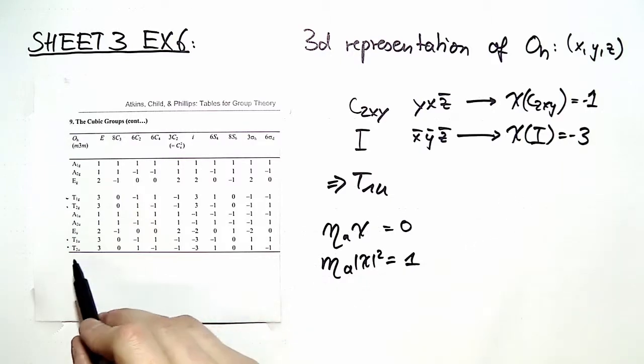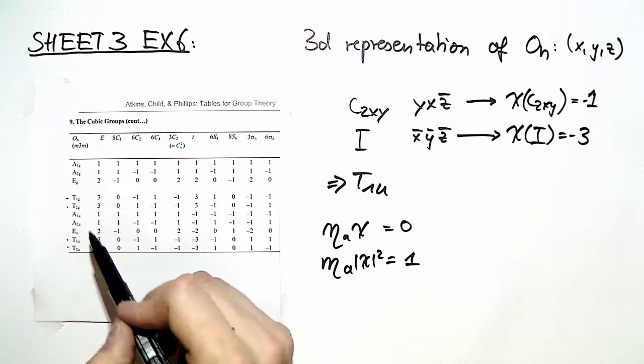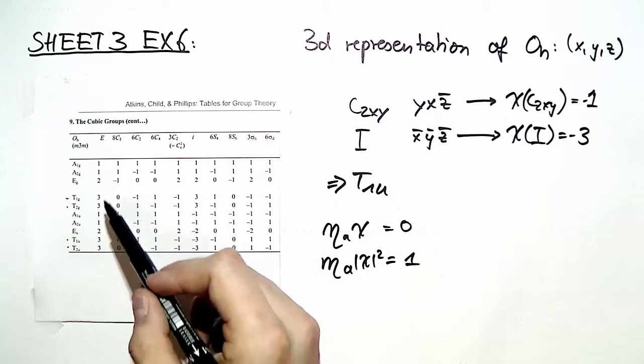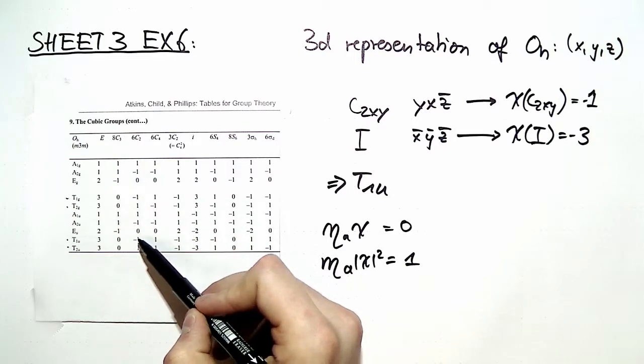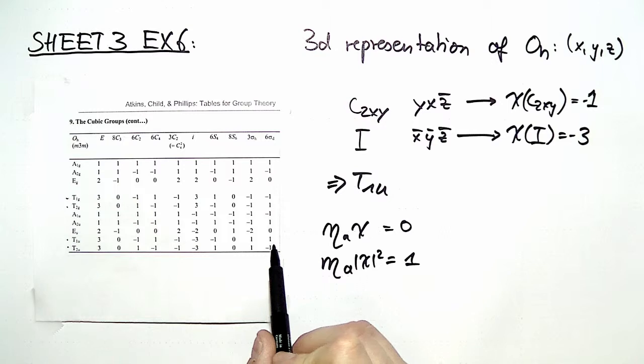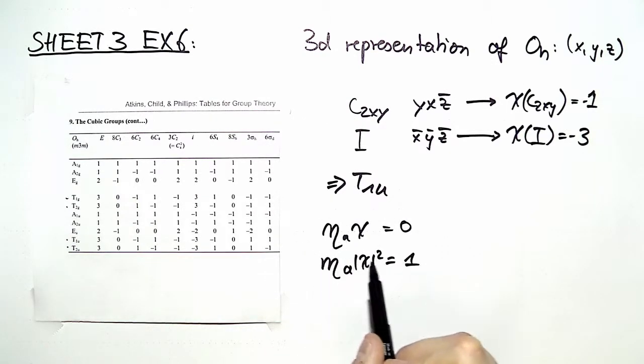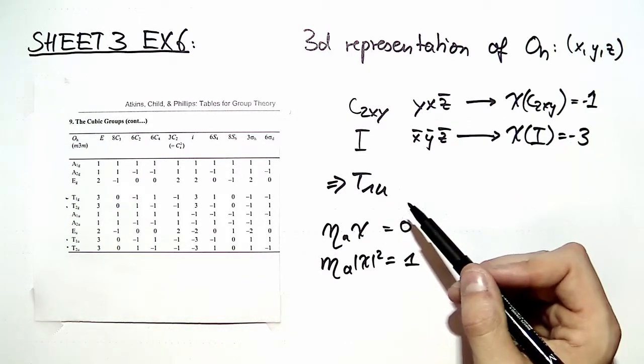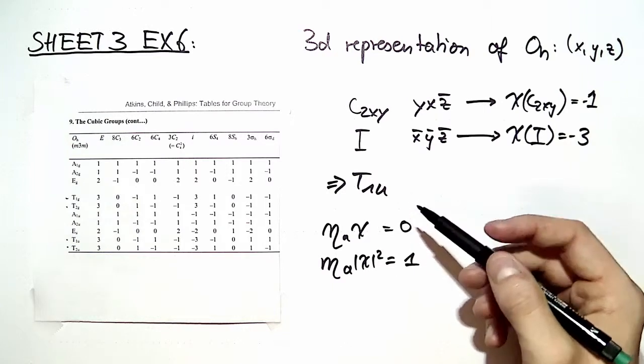We can do those calculations. It's very easy. We take three times one is three, plus zero times eight is zero, plus minus one times six is minus six, and we can add those up, and we see that in fact this yields an average of zero and average squared of one. So t1u is indeed irreducible, and we solve this last exercise of problem set number three.